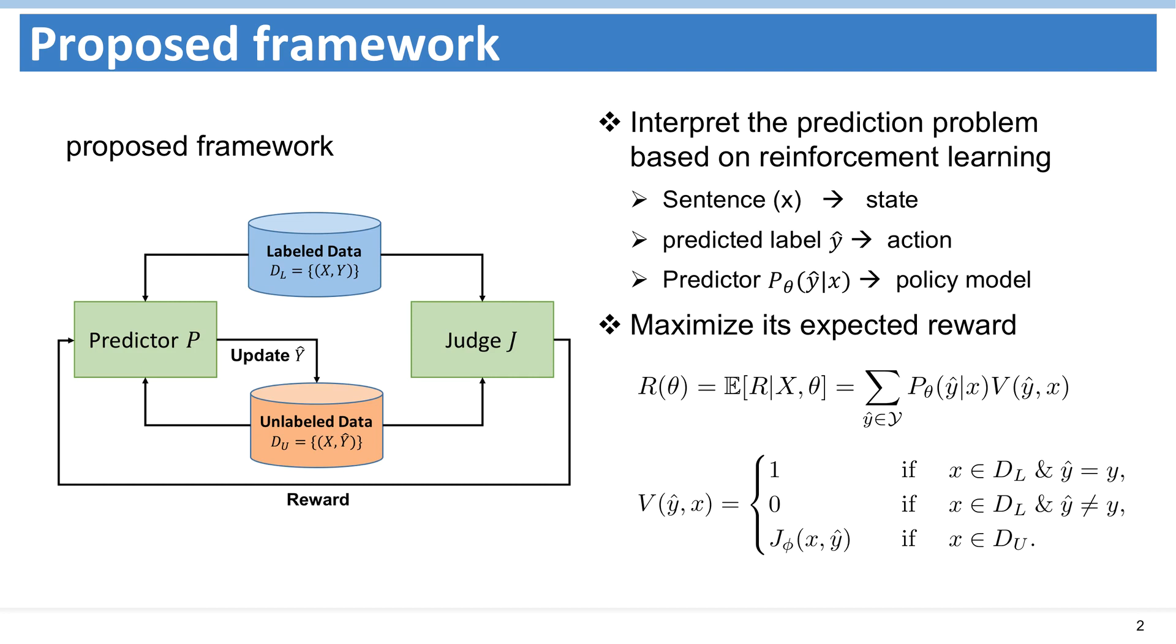The policy model determines the probability that an action is taken once the state is given. The objective is to generate the proper predicted label to maximize expected reward. Under this framework, the action value function of the labeled sentence is based on its corresponding label, and the action value function of the unlabeled sentence is based on feedback from the judge model.